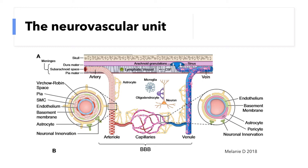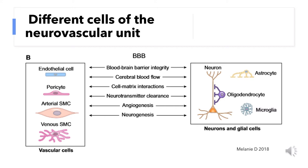In this picture, different cell types of the neurovascular unit are shown, including vascular cells, glia and neurons that contribute in processes such as regulation of the blood-brain barrier permeability, cell-matrix interaction, neurotransmitter turnover, and angiogenesis and neurogenesis.